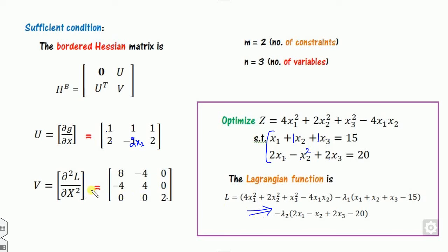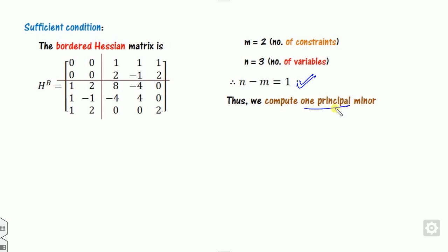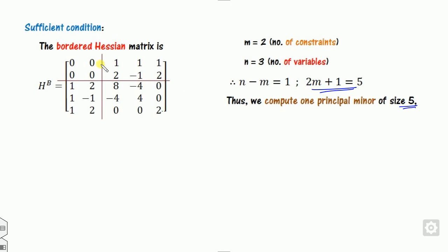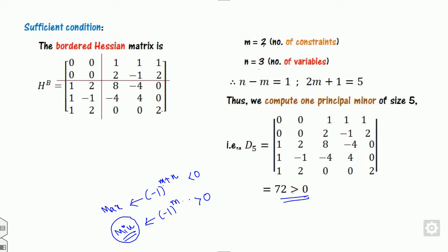Similarly, V is found from the second-order partial derivatives of L. After finding U and V, substitute the stationary point values where the variables appear. The matrix is 5×5, so we compute one principal minor (N minus M = 1) of size 5 (from 2M+1 = 5), meaning we compute the determinant of the full matrix. The determinant comes out positive. Since M = 2, the minimum condition requires (-1)^M = positive, and indeed M+N = 5 gives negative for maximum. Since the determinant sign corresponds to the minimum condition, this stationary point is a minimum.